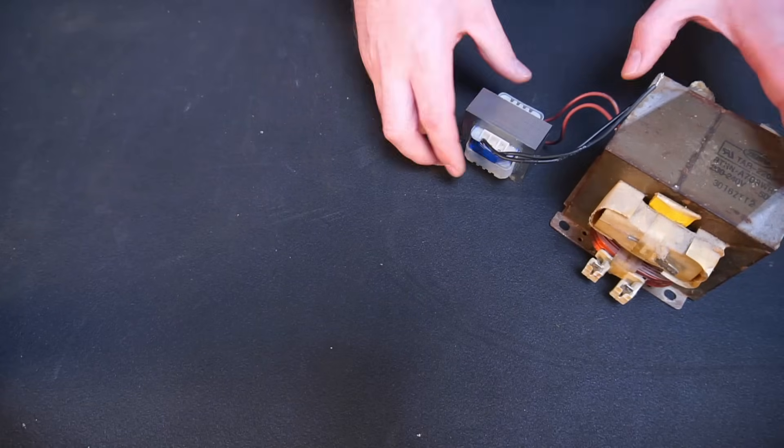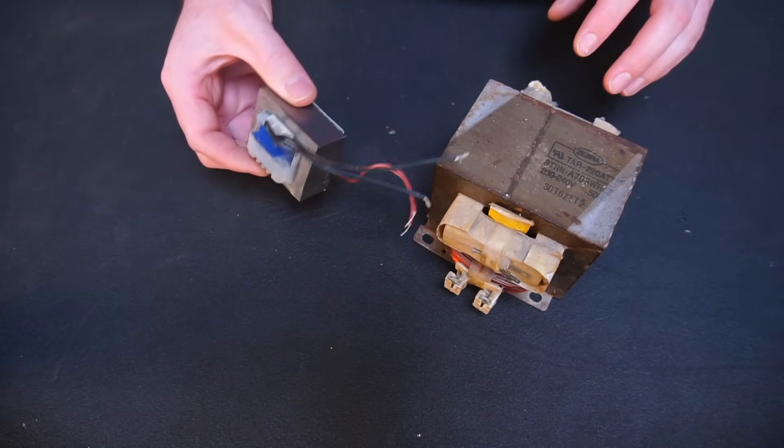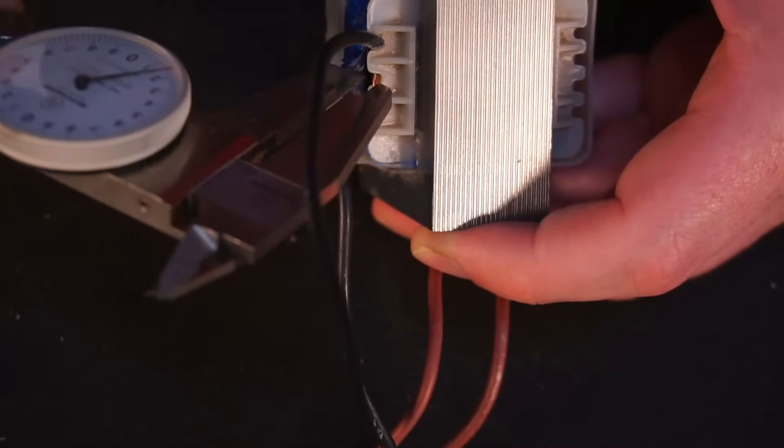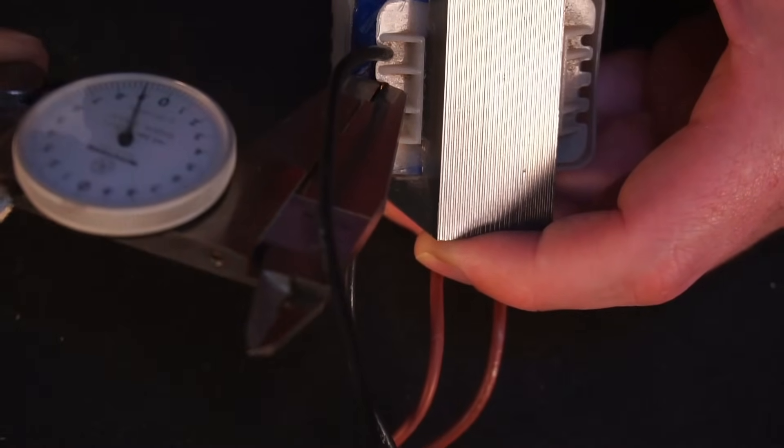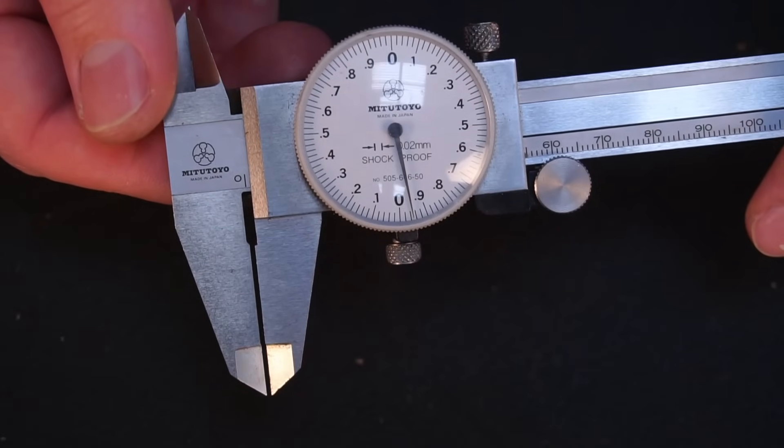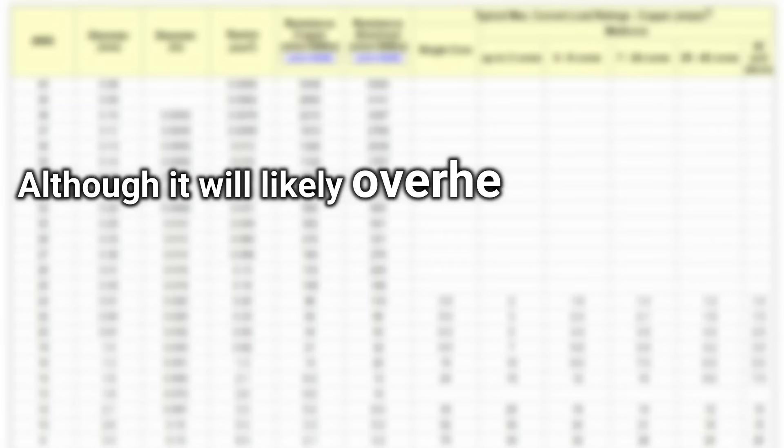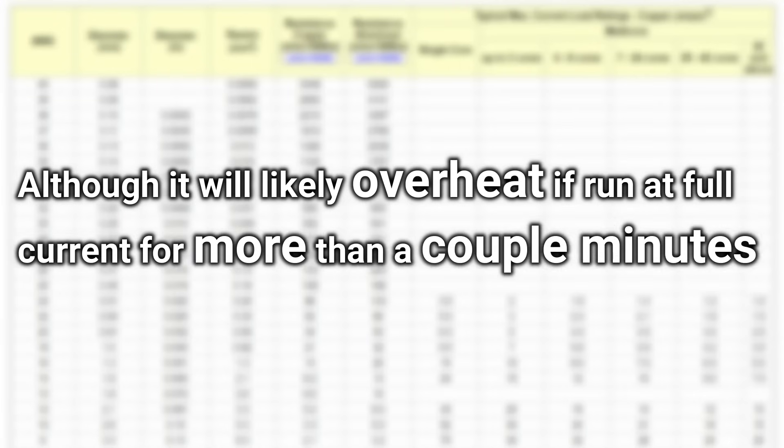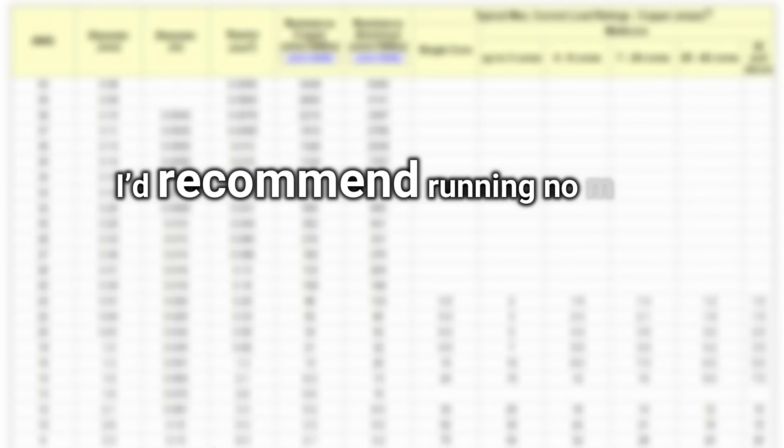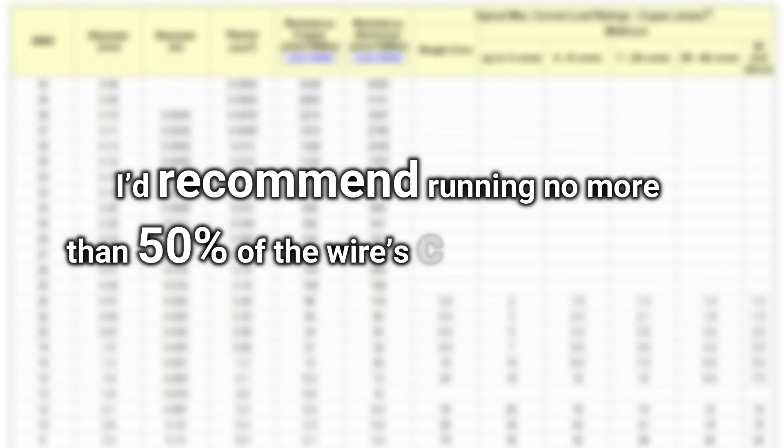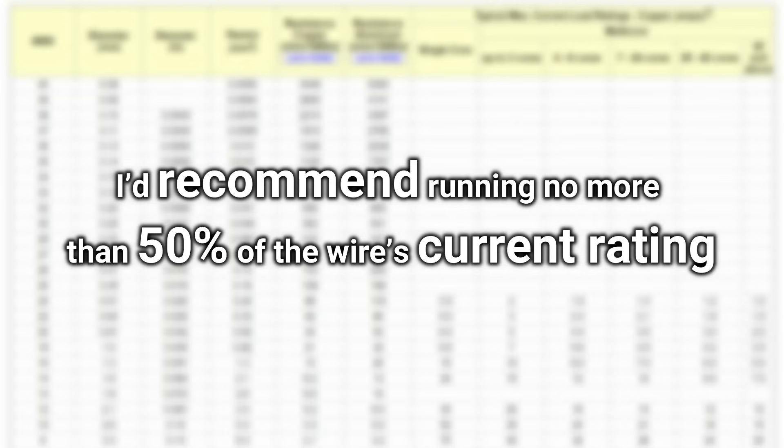I used a pair of vernier calipers to measure the wire diameter, which was just under a millimeter. Using an American wire gauge chart to cross reference my wire diameter, this means my wire is 18 AWG or thereabouts. This means I can run up to 9.5 amps of current through the transformer's winding, although it will likely overheat if run at full current for more than a couple minutes. I'd recommend running no more than 50% of any given current rating to prevent the winding from overheating.